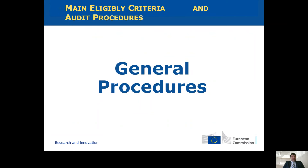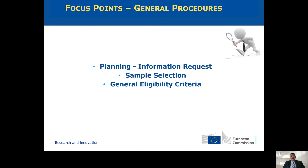So that was the part about the most common errors. The purpose of presenting that was to help draw your attention to the more risky areas in the CFS. Now we will look at some general procedures applicable for all cost categories, covering the planning of the work, information requests, the type of documents used — which will be a very important discussion — sample selection, and then we will list the general eligibility criteria and the main types of audit tests.